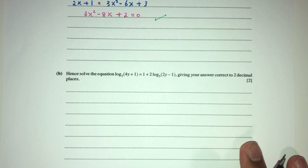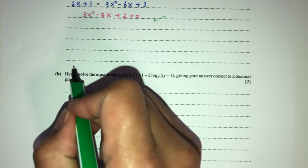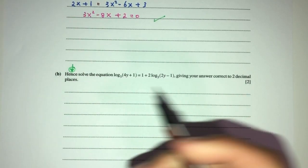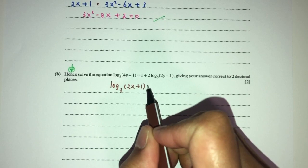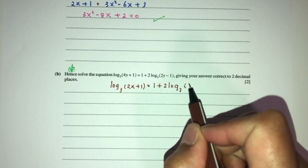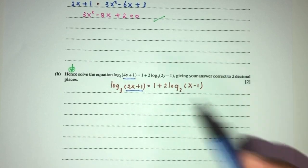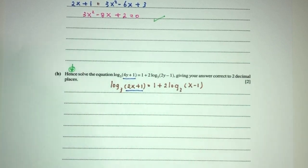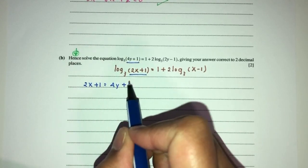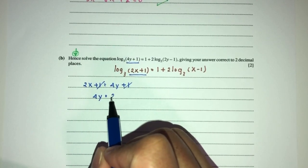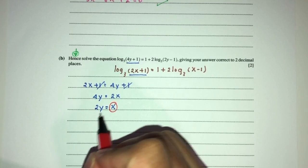For part b, we have to solve the related equation, giving answers to 2 decimal places. By observation, compared to part a which had 2x + 1, the new equation has 4y + 1. So 4y = 2x, meaning x = 2y. We use the substitution x = 2y in the quadratic equation.